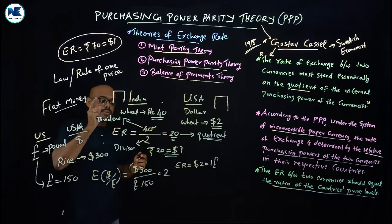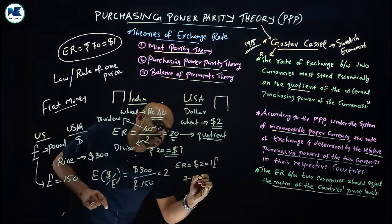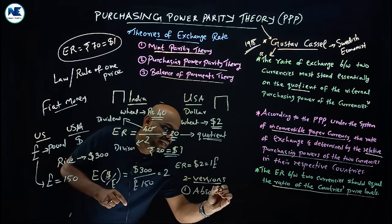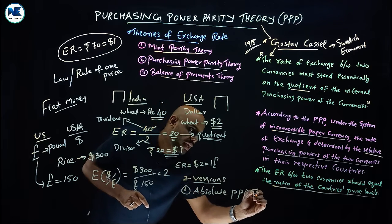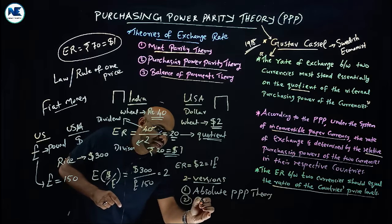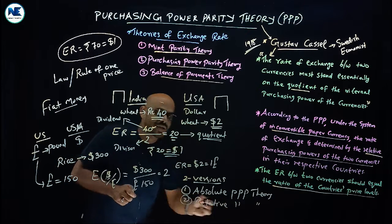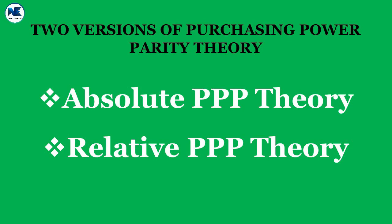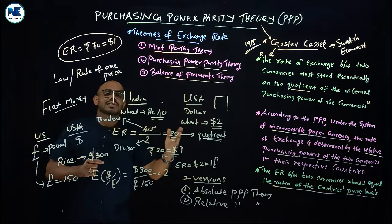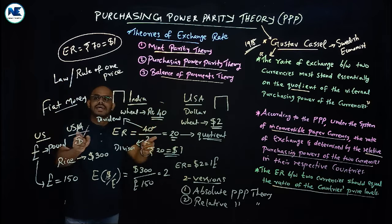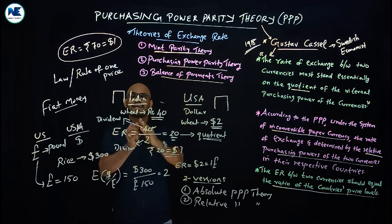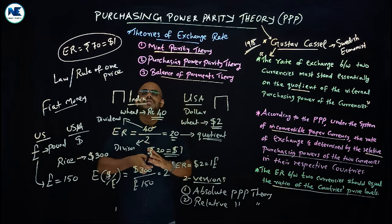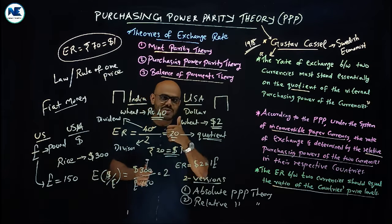This is the crux of the Purchasing Power Parity theory. There are two versions of Purchasing Power Parity theory: first, Absolute Purchasing Power Parity theory, and second, Relative Purchasing Power Parity theory. These versions will be explained in detail in the next part of the video. Thank you so much, have a nice day, happy learning.